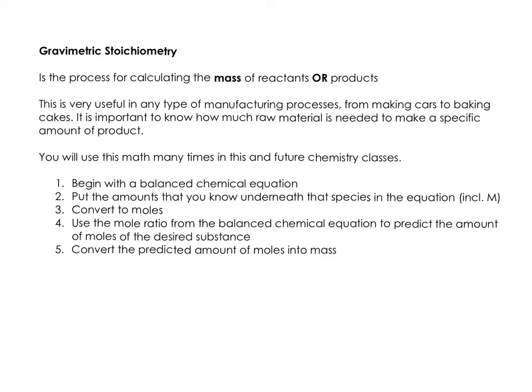First, you have to have a balanced chemical equation. Then put the amounts that you know underneath that species in the equation, including the molar mass. Step three, convert to moles for anything you have mass and molar mass for. Use the mole ratio from the balanced chemical equation to predict the amount of moles for the desired substance, and then convert the predicted amount of moles into mass.